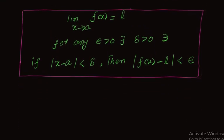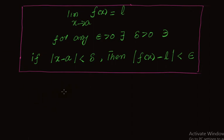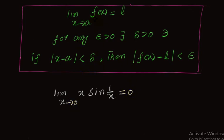Now we apply this definition to the given question: limit x approaches 0 of x·sin(1/x) equals 0. Comparing to the definition, for |x - a| we have |x - 0|, and for |f(x) - L| we have |x·sin(1/x) - 0|.